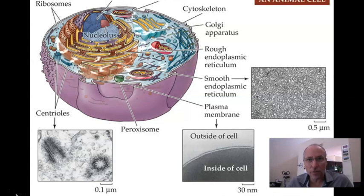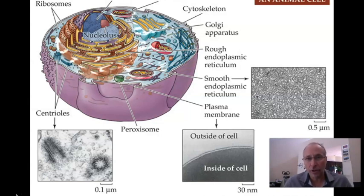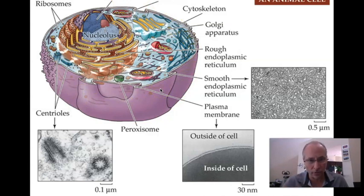Now that we've seen how the cell's decision-making processes actually work — all the genetics and the genetic machinery — it's time to put it all together and see how cells actually function. My daughter first saw this picture in fourth grade, and it's something we see pretty much every year you take biology since then.